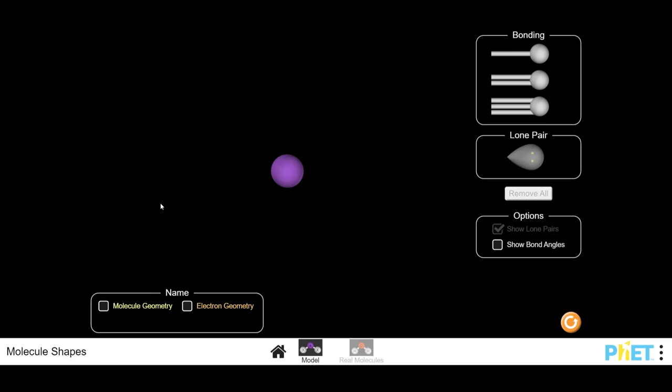Now I want to use the molecule shape simulation from PhET to figure out what the molecular geometry or the shape is of these molecules. As I start adding bonds to a central atom, we know that when we have two sites on the central atom, we get a linear molecule.